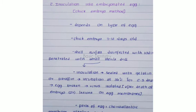The second method is inoculation into embryonated egg, also called the chick embryo method. The type of egg used depends on the type of virus. The chick embryo must be 7 to 12 days old. Its shell surface is first disinfected with iodine, then penetrated with a small sterile drill. After penetration, inoculation is done and then sealed with gelatin or paraffin.